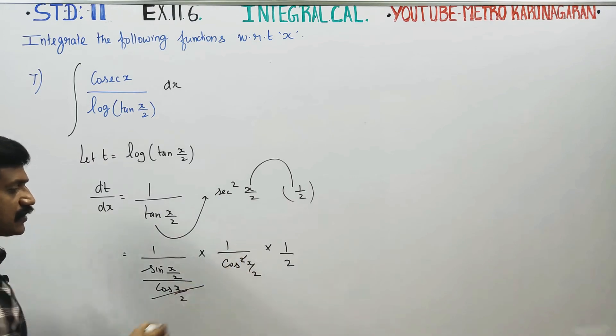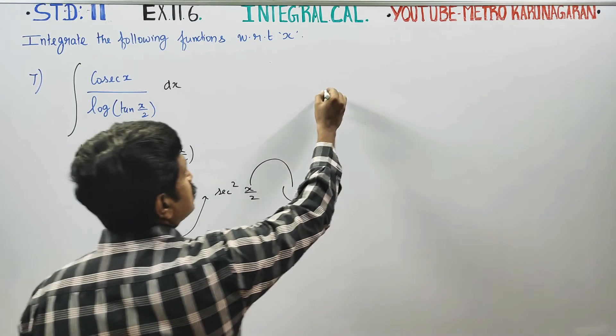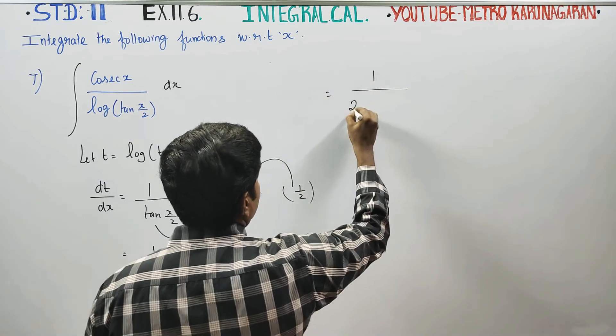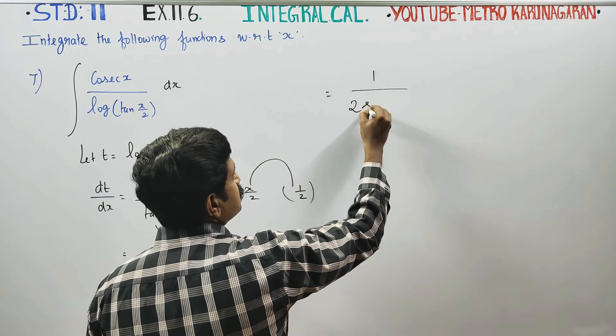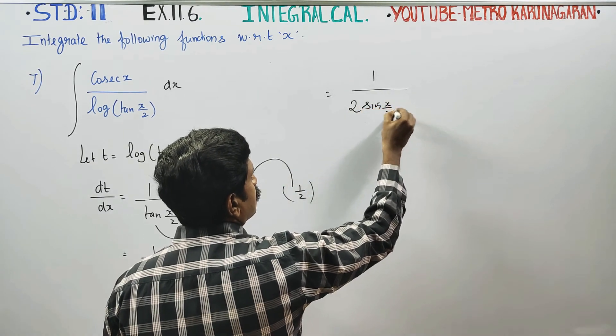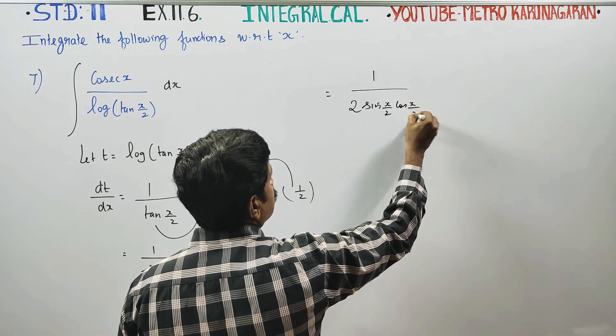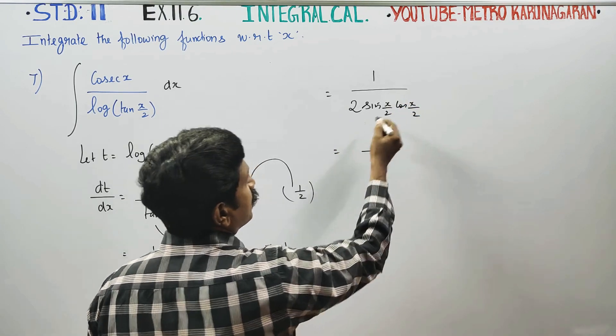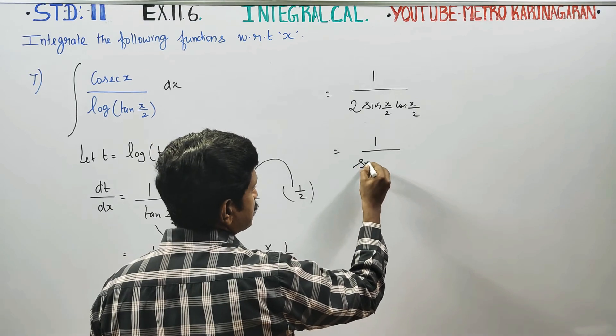Cos square cancels. This equals 1 by 2 times 2 times sin x by 2 times cos x by 2. This is a double angle formula: 2 times sin x cos x is sin 2x.